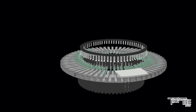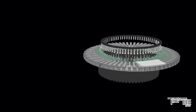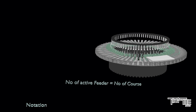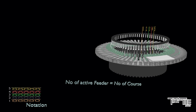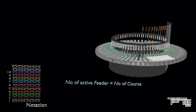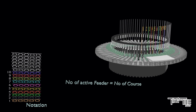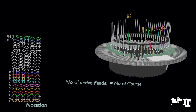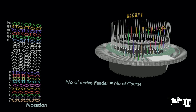In a normal circular knitting machine, there are on average 90 feeders. Since the number of active feeders equals the number of courses, a maximum of 90 courses can be produced in one revolution. The pattern generally fits within 1.9 inches or 5 centimeters. But what if there are more than 90 courses in a fabric repeat? One solution is to change yarn and feeder after every revolution, but it is not economically viable.